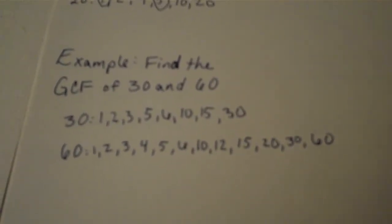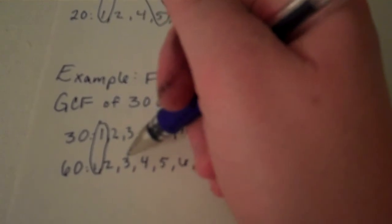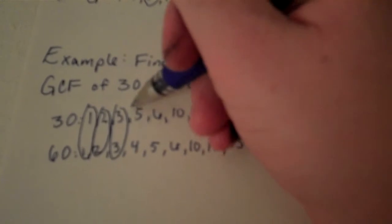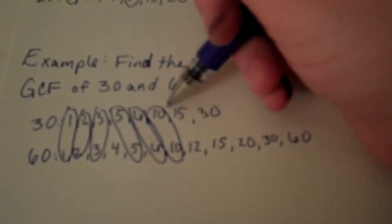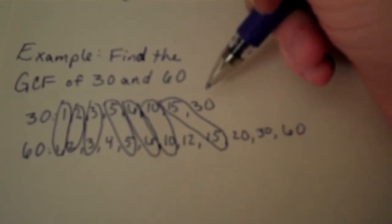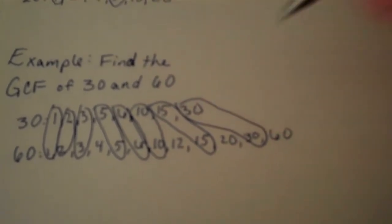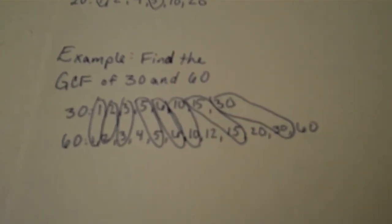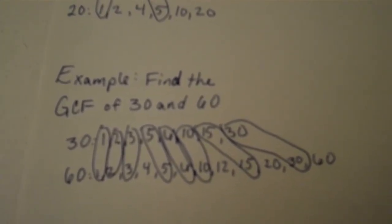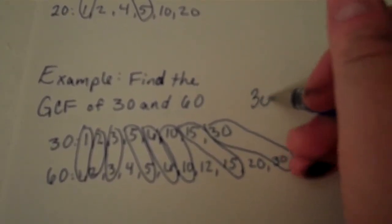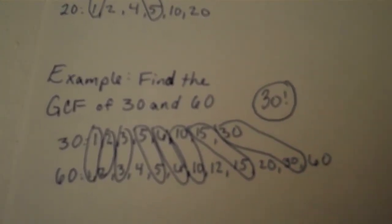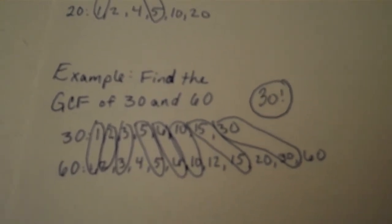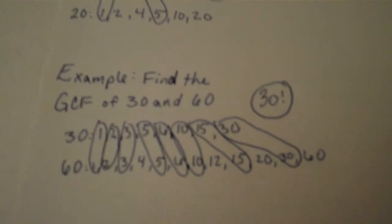There are a number of common factors here. One, two, three, five, six, ten, fifteen, and thirty are all common factors. The greatest common factor is the very biggest one, which in this case is thirty. Thirty is the greatest common factor of thirty and sixty — it's the biggest number that I could divide thirty and sixty by and get a whole number.